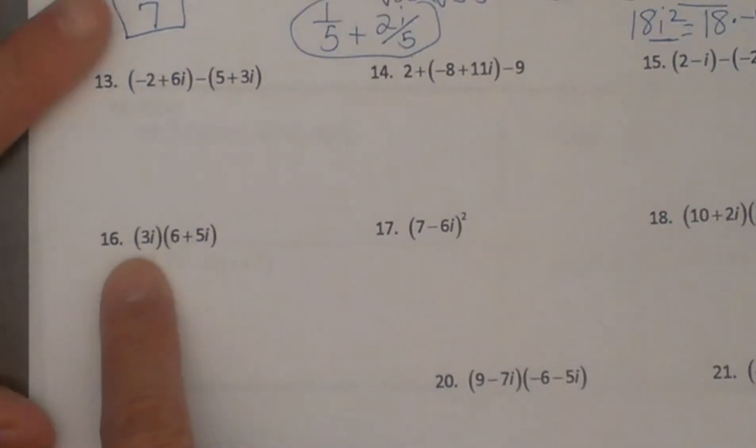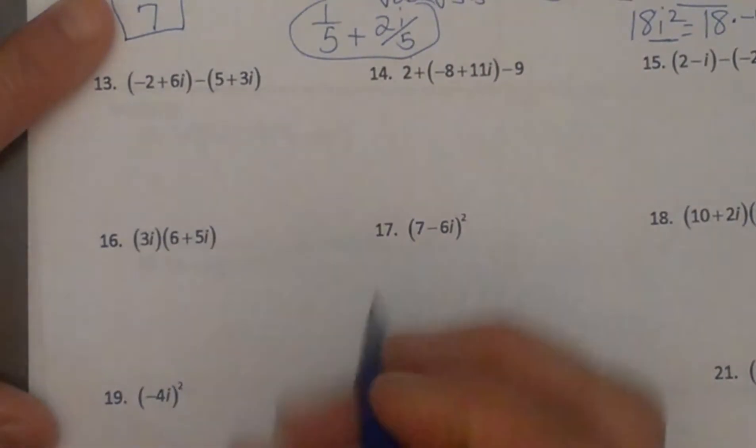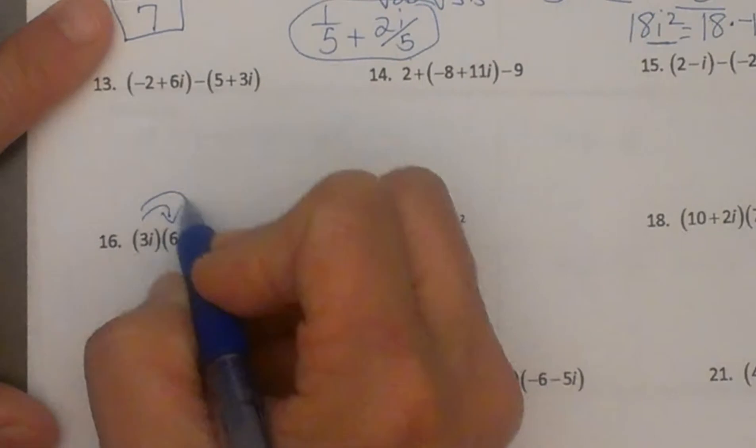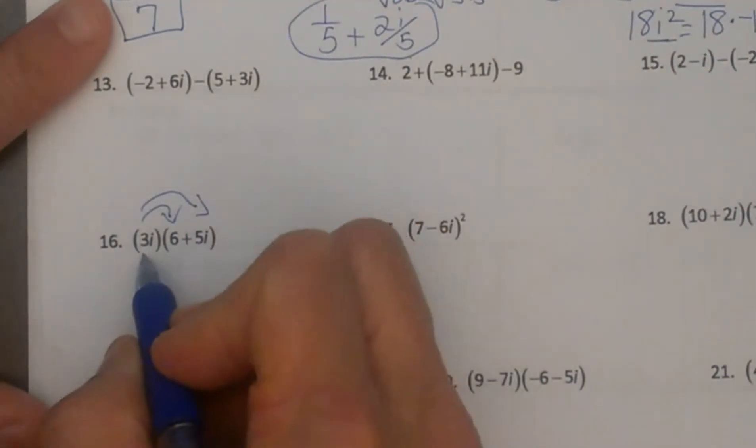Let's start here at number 16. We have 3i times 6 plus 5i, so we have a monomial times a binomial. This one is just a distributing problem. We are just going to distribute the 3i in, so 3i times 6 is 18i.